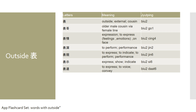Expression or external feelings and emotions shown on the face in Cantonese is 表情 (biu ching). To perform or performance is 表演 (biu yin). To show or to indicate in Cantonese is 表示 (biu si). To express, voice, or convey in Cantonese is 表達 (biu daat). If you wish to review these words in the app, please look at the flashcard set named Words with Outside.